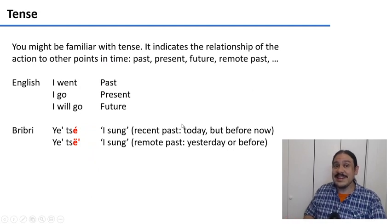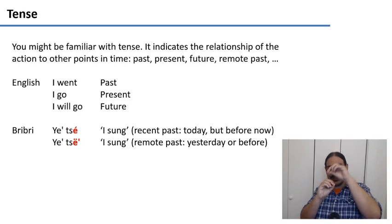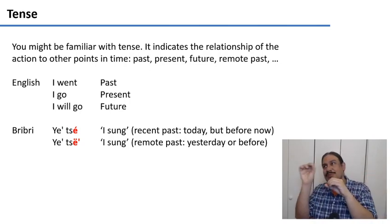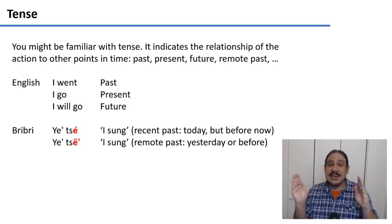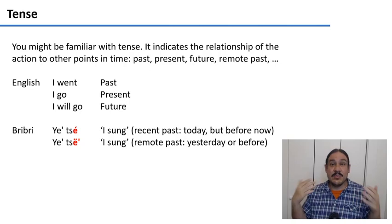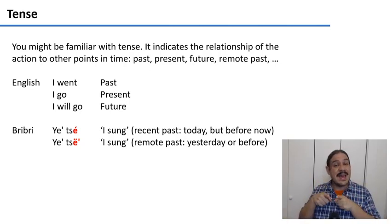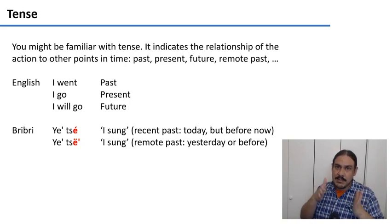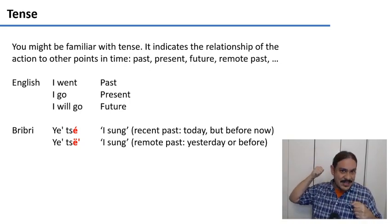Tense might be familiar to you. It indicates the relationship of the action to other points in time. For example, in English we have the past — 'I went' — or the future — 'I will go.' Languages can split the continuum of time in other ways. For example, BriBri has two types of past tense: the recent past, for something that happened today but before — like in the morning — and the remote past, which is something that happened yesterday or someday before that.